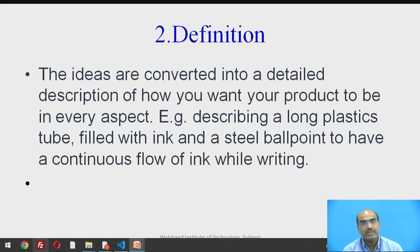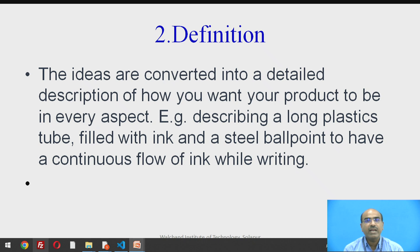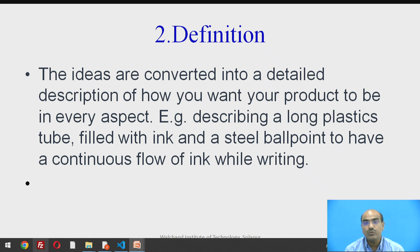In the definition stage, ideas are converted into a detailed description — the proof of concept which describes your idea in its totality. For example, describing a long plastic tube filled with ink and a steel ballpoint to have a continuous flow of ink while writing. This is the artifact now defined in its particular aspect — this is the definition stage.